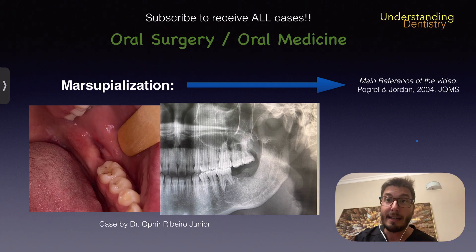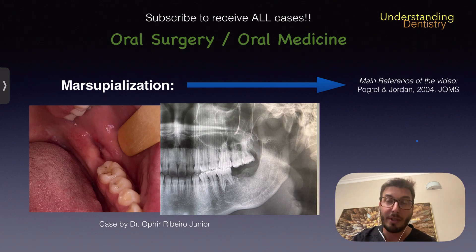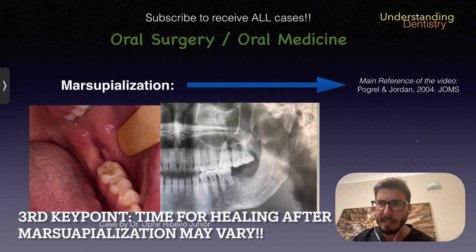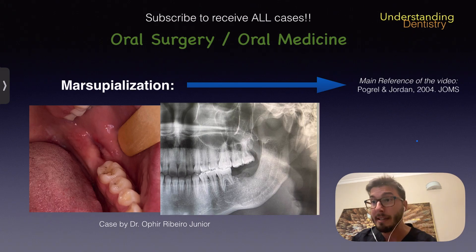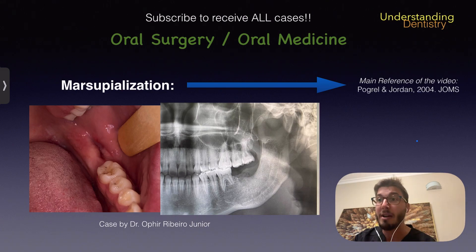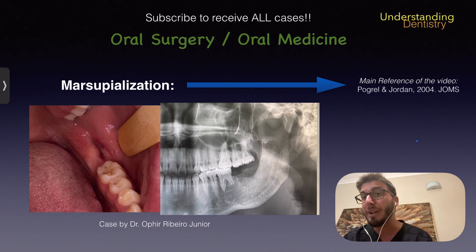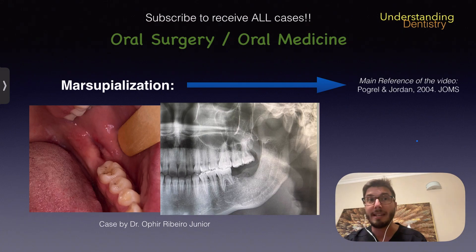This image was taken 12 months after the first approach — the suturing of the cystic lining to the oral mucosa — and we can see that the cavity not only healed, but bone is actually forming, with newly formed bone in this cavity. Dr. Ophir's strategy was to then perform a second surgery to remove the rest of the cysts, because OKC may lead to recurrence. This is one of the accepted approaches and is much recommended for a case like this.